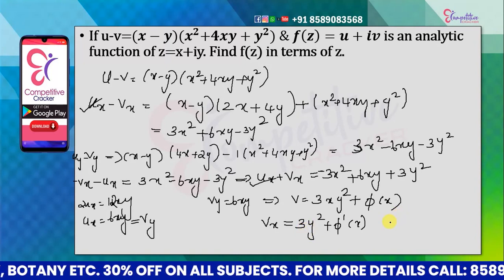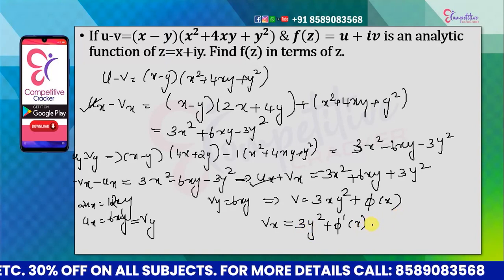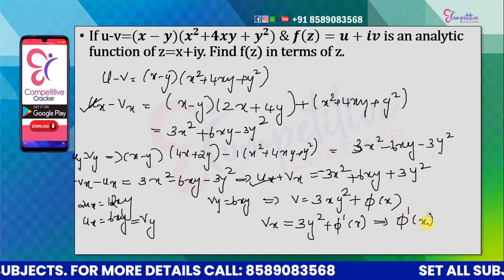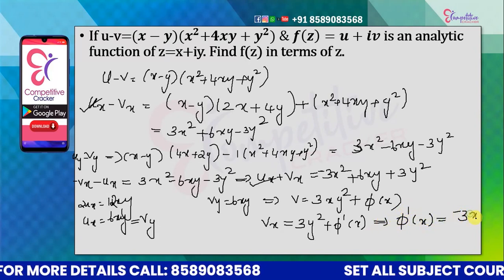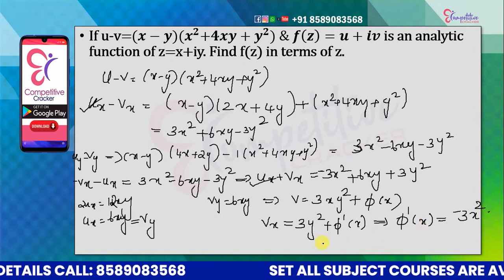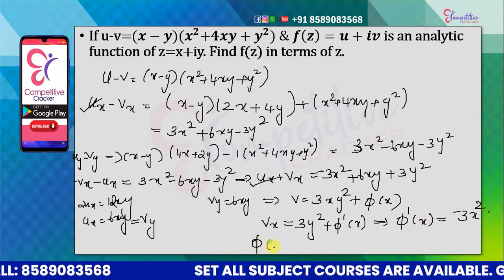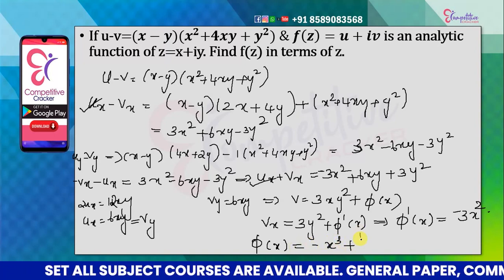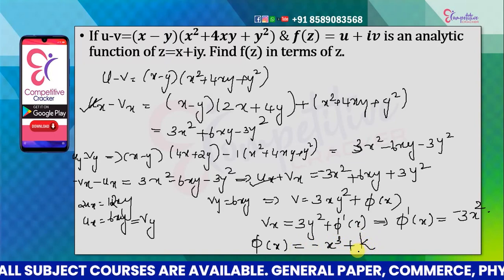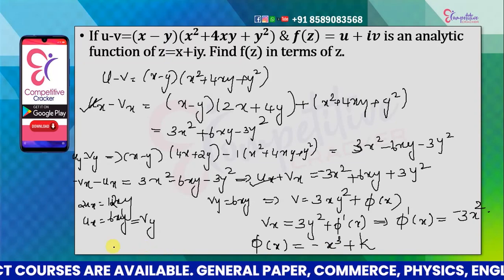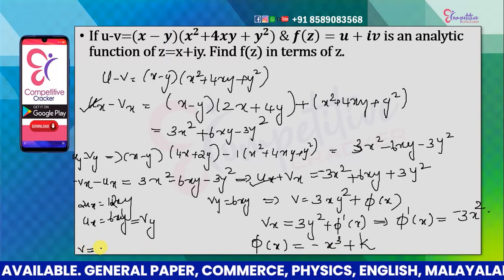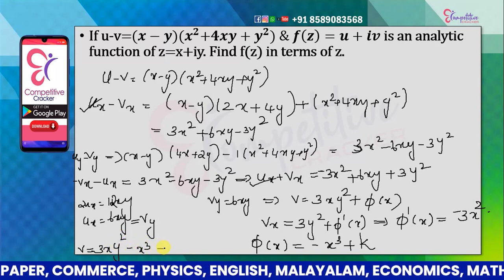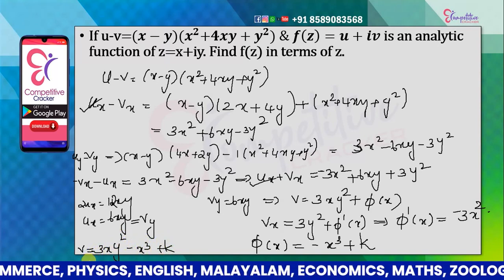Writing vx and using the Cauchy-Riemann equations gives us 3y squared plus φ′(x). Solving, φ′(x) equals minus 3x squared, so φ(x) equals minus x cubed plus k. Therefore, v equals 3xy squared minus x cubed plus k.